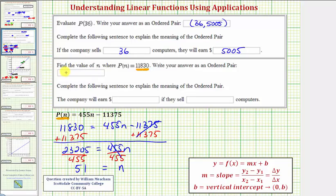So if the ordered pair were given the output or function value, which is the second coordinate, 11,830, we discover that this is the function value or the output, the input n would be 51. So this means the company will earn 11,830 dollars if they sell 51 computers.